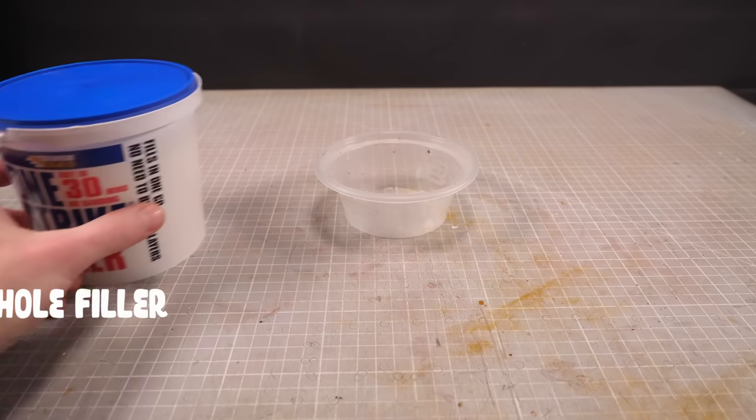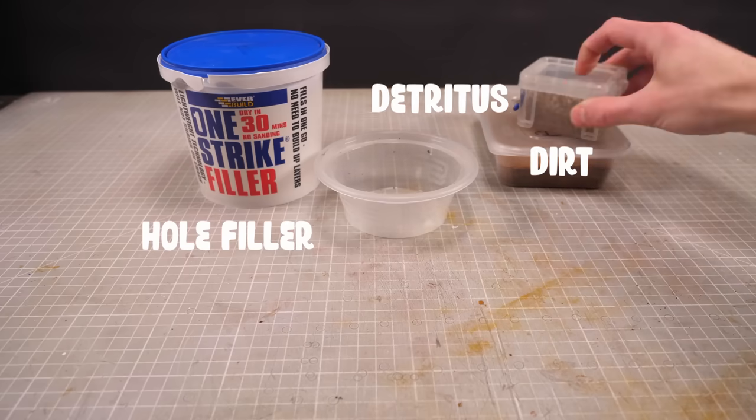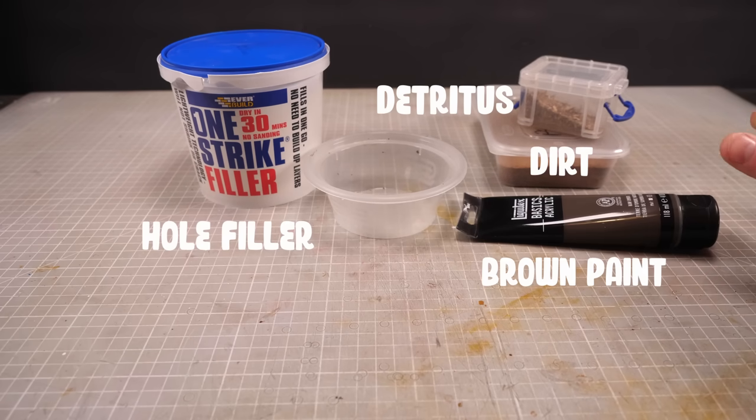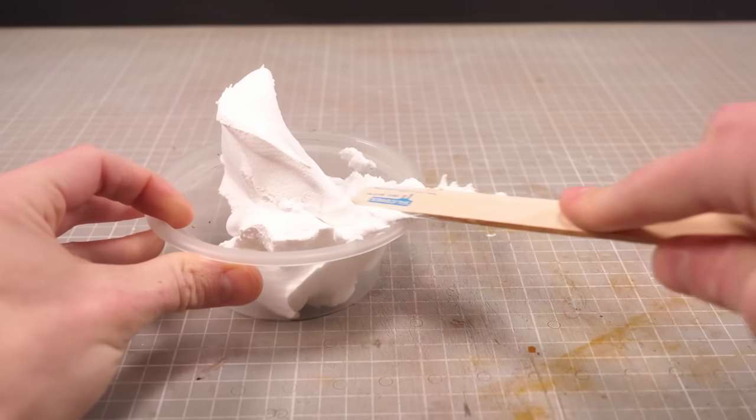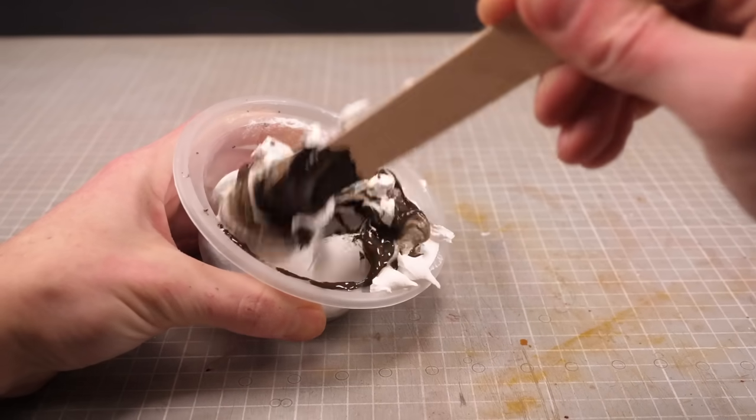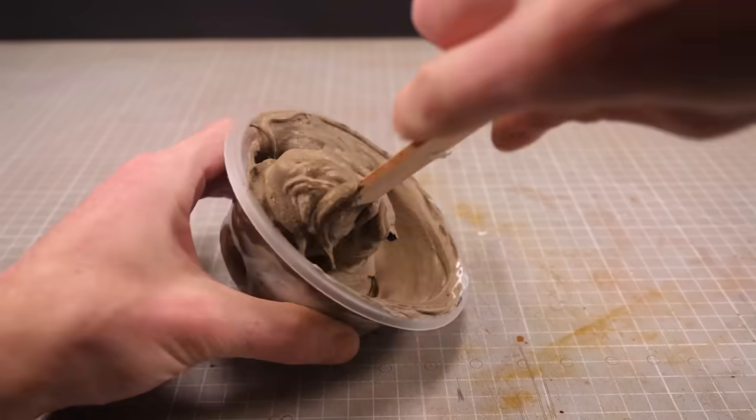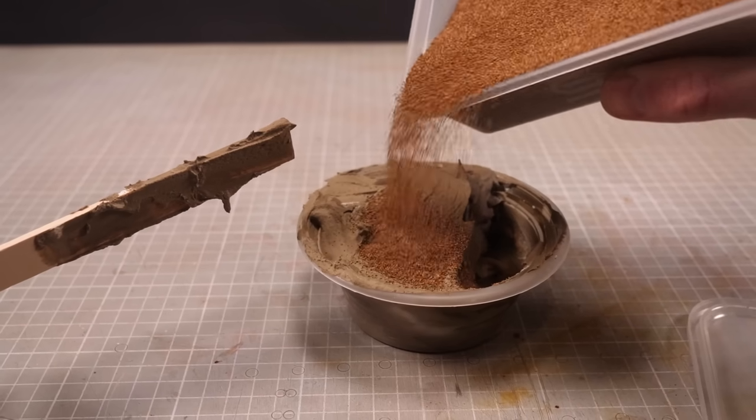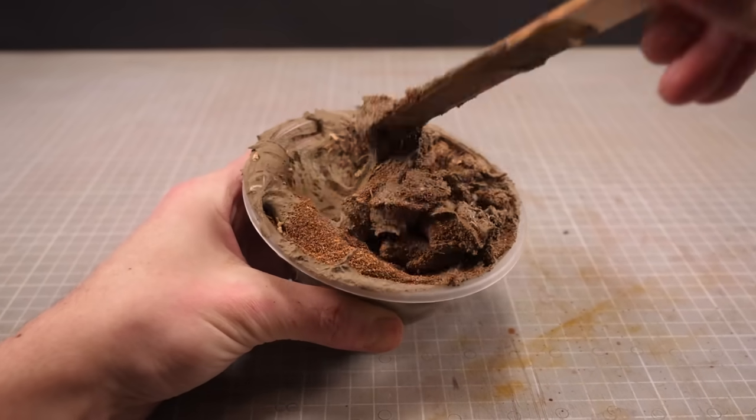When it comes to making mud I like to start with hole filler, add some dirt, detritus and then some brown paint. I'll start by finding a mixing cup that's too small then filling it to the brim with too much hole filler so that when I add my brown paint on top I can barely mix it together. Then I'll start adding dirt and detritus on top making sure to spill lots of it onto my tabletop while mixing.